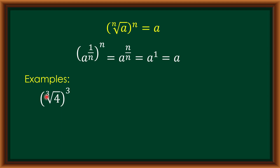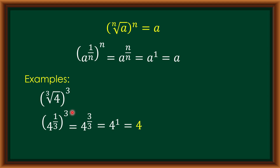Let's have the following examples. First, we have the cube root of 4 raised to 3. Since our index is equal to the exponent, in exponential form it will be 4 raised to 1 third, raised to 3. Multiplying the two exponents gives us 4 raised to 3 over 3, and 3 divided by 3 is equal to 1. Therefore, we have 4 raised to 1, which is equal to 4. Another example: the square root of 64. We think of a factor of 64 where the exponent is equal to 2. Since 8 squared equals 64, and the index equals the exponent of 2, the answer for the square root of 64 is 8.